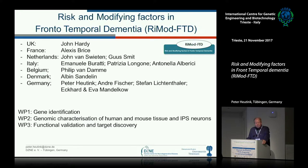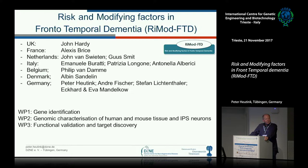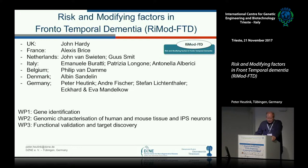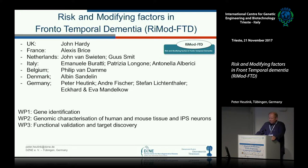The REMOTE consortium is a European-funded consortium through the JPND program of FP7, consisting of people from different countries. We divided the work into three work packages: Work Package 1 to identify additional genes causing FTD; Work Package 2 for multi-omics characterization of human brain, mouse, and IPS neurons; and Work Package 3 for functional validation and eventually target discovery.